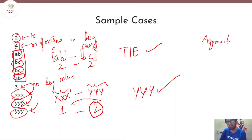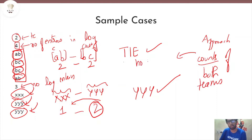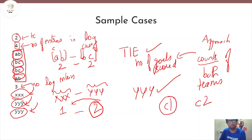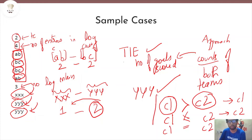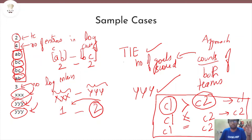So what will our approach be? It will be very simple. We will look at the counts of both teams — the count signifies the number of goals scored. Then at the end, we compare. Suppose I have team C1 and team C2. If C1 is greater than C2, team C1 wins. If C1 scores lesser goals than C2, then C2 wins. If both counts are equal, it's a tie. It's a very simple problem requiring you to compute the count and do comparisons.